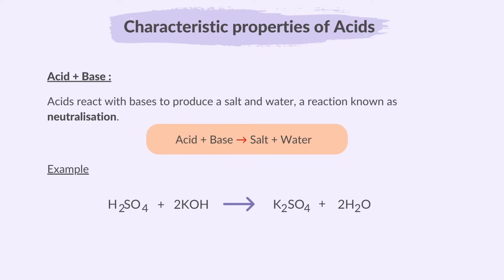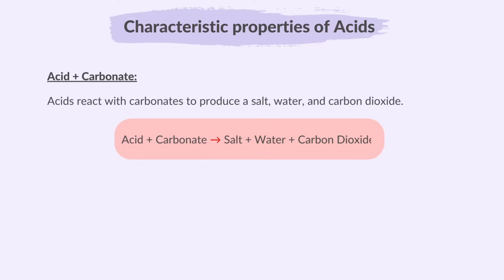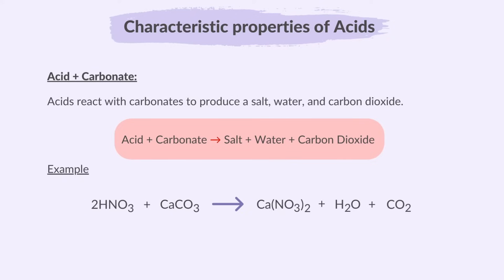Acids react with carbonates to produce a salt, water, and carbon dioxide. For example, nitric acid reacts with calcium carbonate, and the products are calcium nitrate, water, and carbon dioxide.